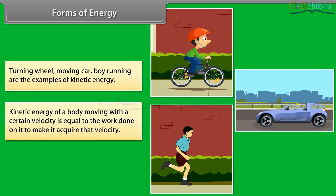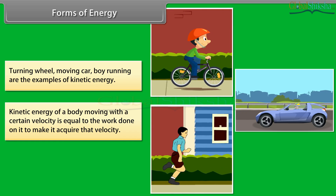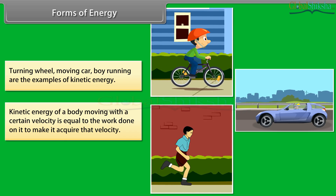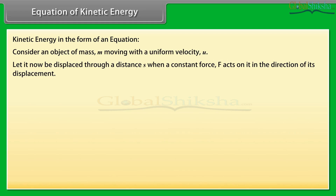The kinetic energy of a body moving with a certain velocity is equal to the work done on it to make it acquire that velocity. Equation of kinetic energy: let us express the kinetic energy of an object in the form of an equation. Consider an object of mass M moving with a uniform velocity U. Let it be displaced through a distance S when a constant force F acts on it in the direction of its displacement. We know that the work done W is F·S.